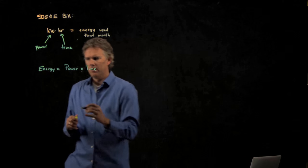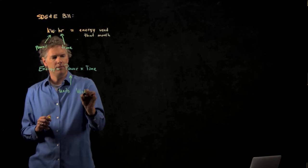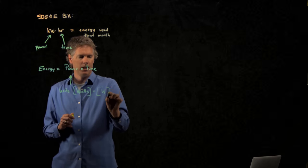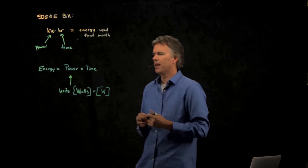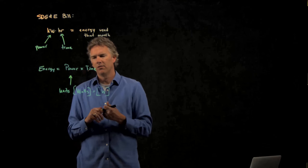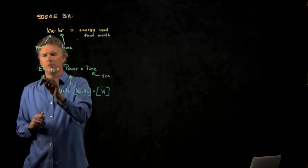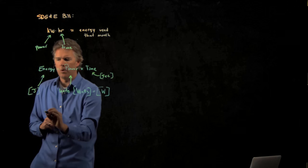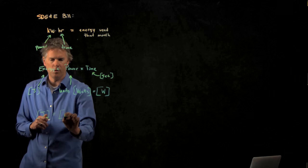Okay, so power is in units of watts. And watts we write with a capital W. Again, we've run out of letters, so W is watts, but W is also work, and W is also width. It's a big nightmare, but you guys will hopefully figure it out. Time is, of course, seconds. Energy is, of course, joules. So a joule is equal to a watt second.